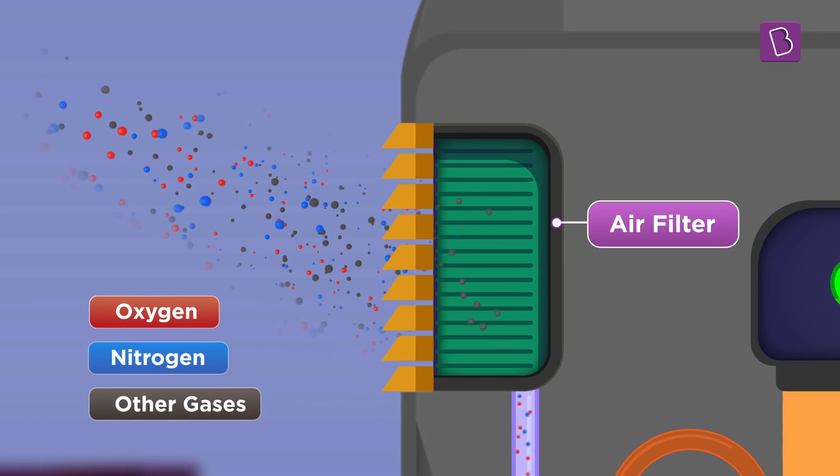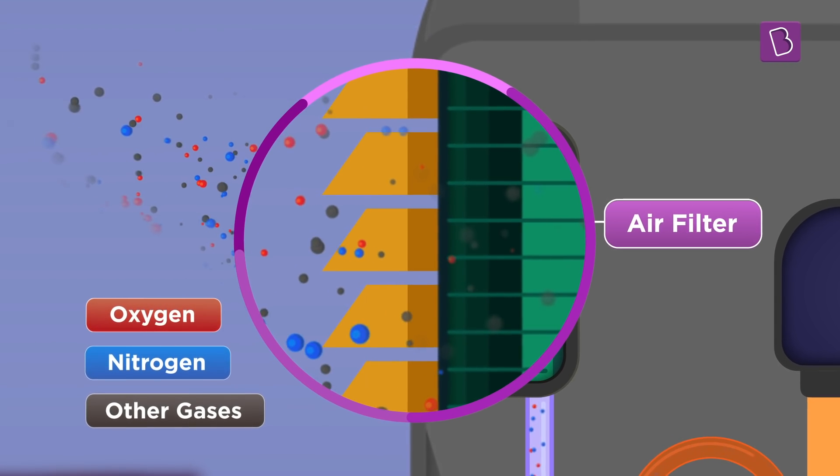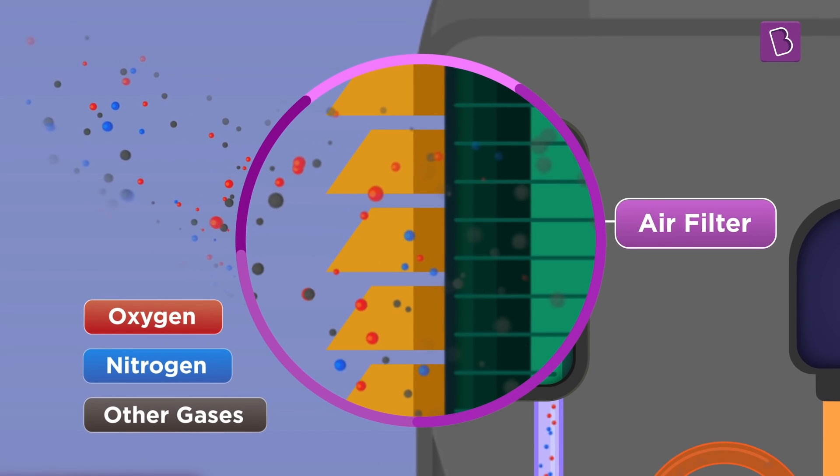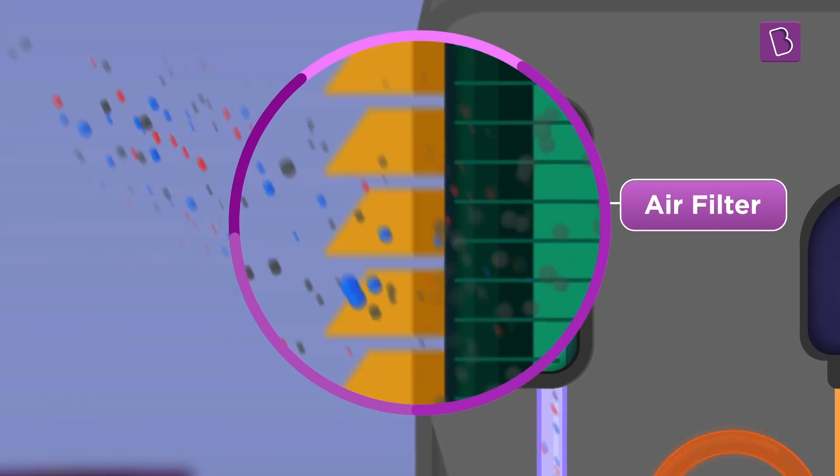The concentrator starts by taking the air around us and filtering it to remove dust, smoke or other impurities. In a healthy body, our nose hair would normally do this job.